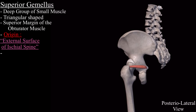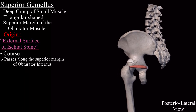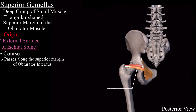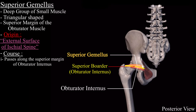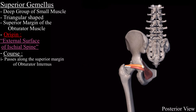After origination, it passes along the superior margin of the obturator internus tendon. This is the obturator internus muscle and this is the superior gemellus muscle, passing along the superior border of the obturator internus muscle. Just like the obturator internus muscle, the superior gemellus muscle also passes posterior to the hip joint.